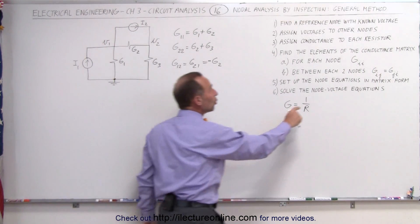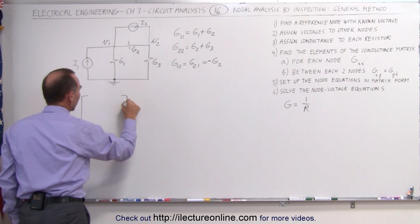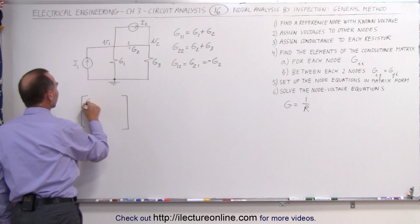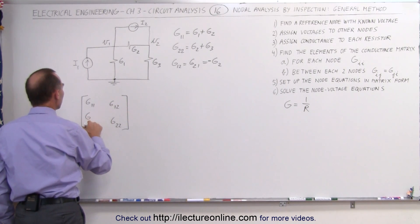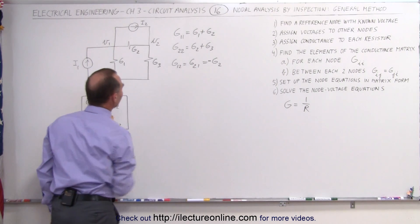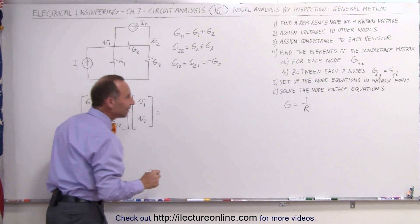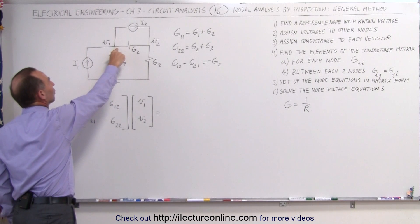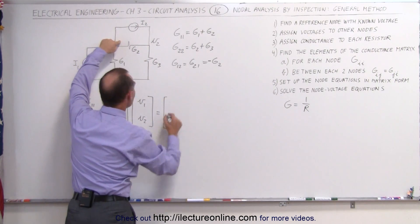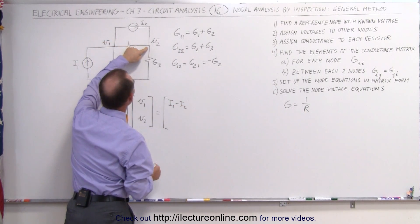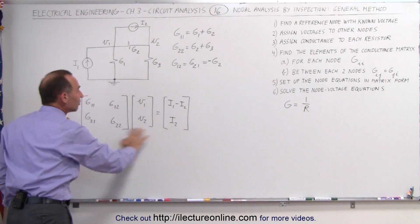We now have all the elements to set up the node voltage equations in matrix form. The matrix contains all the conductance elements: G11 in the upper left, G22 in the lower right, G12 in row 1 column 2, and G21 in row 2 column 1. We multiply that by the node voltages V1 and V2, and that equals the currents entering each node. I1 enters node 1 and I2 leaves, so for node 1 it's I1 minus I2. For node 2, only I2 enters.